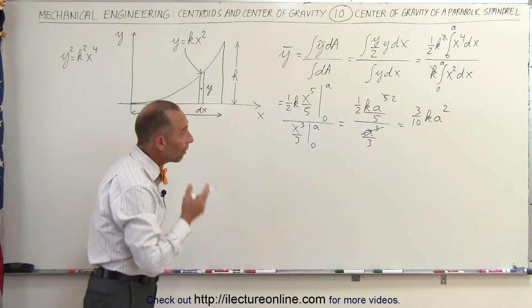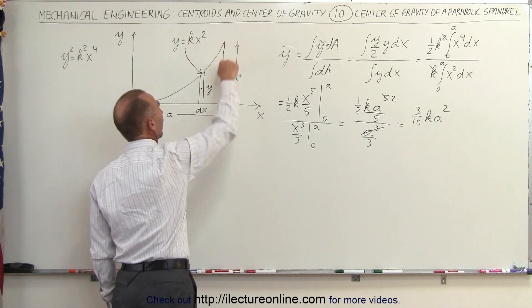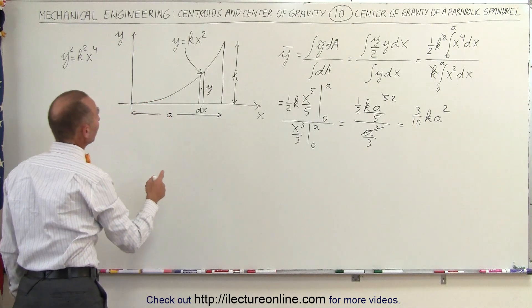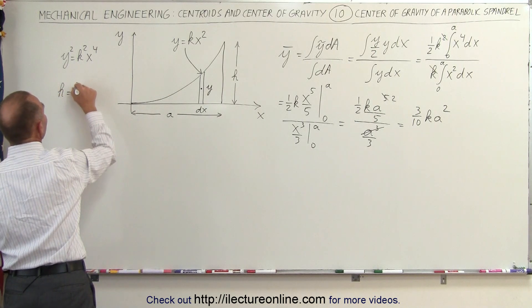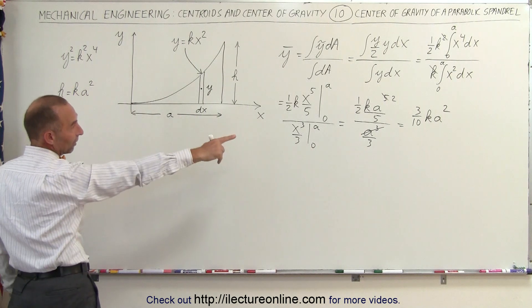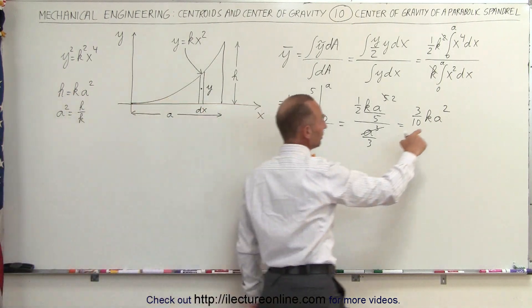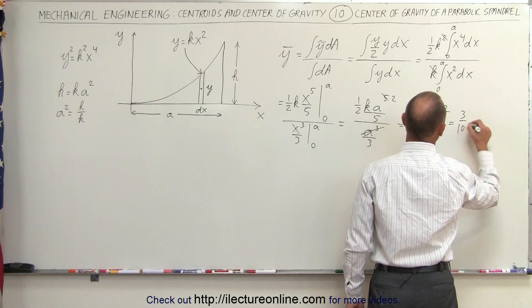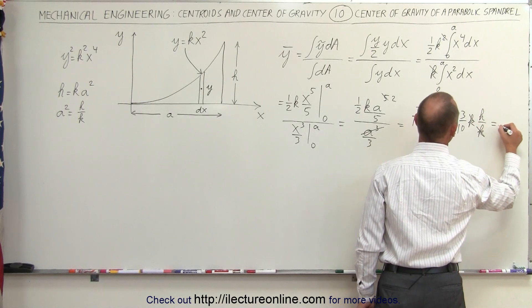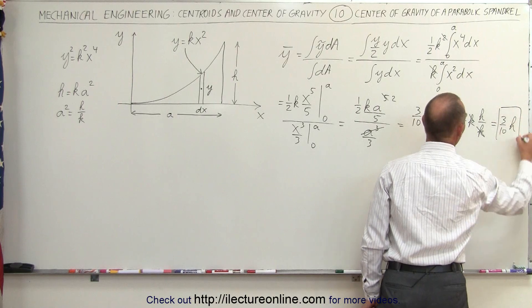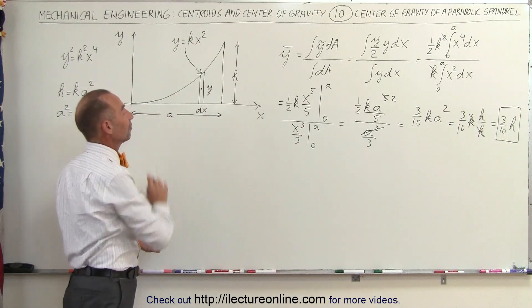That would be the answer, however we may want to write it in different terms. Since we're in the y direction and the height of the spandrel is H, we can plug in A and H into the equation y = kx² to say that H equals k times A squared, or A squared equals H divided by k. Substituting into our result: 3/10 · k · (H/k) — the k's cancel — and finally we see that y-bar is equal to 3/10 times H. That would be the y coordinate of the center of gravity of the spandrel.